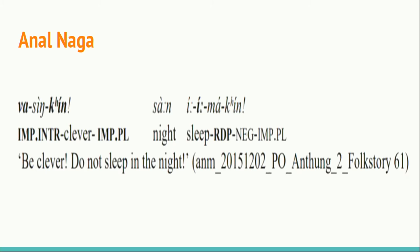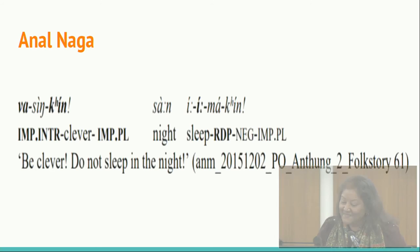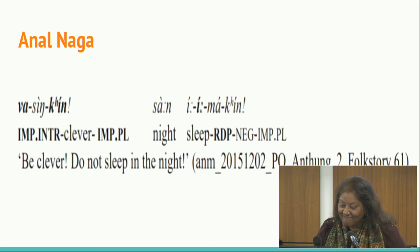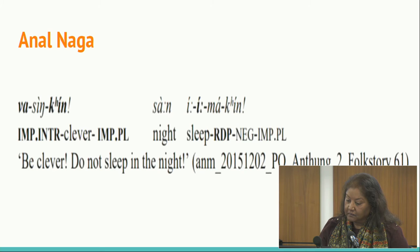In Anal Naga, we see something like the main verb and then the copied form called the reduplicated form. What is that? It's similar to what we've seen — maybe intensification, something like that. It seemed like maybe an imperative context too.